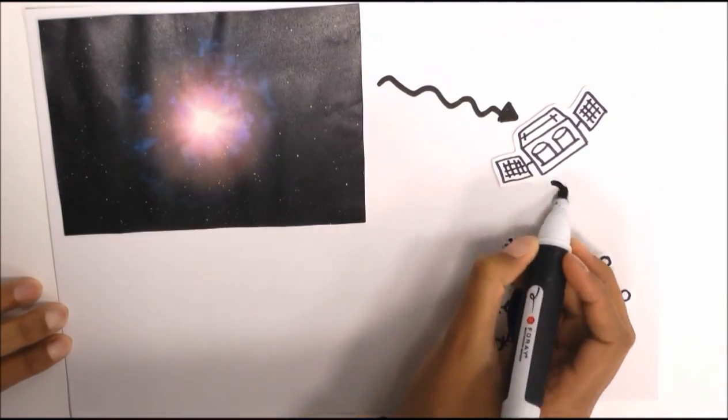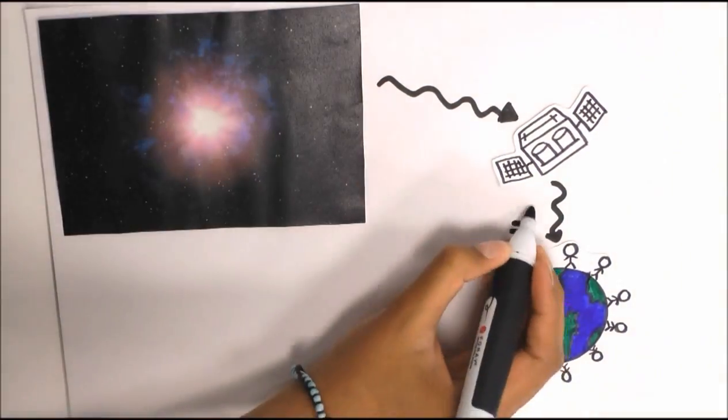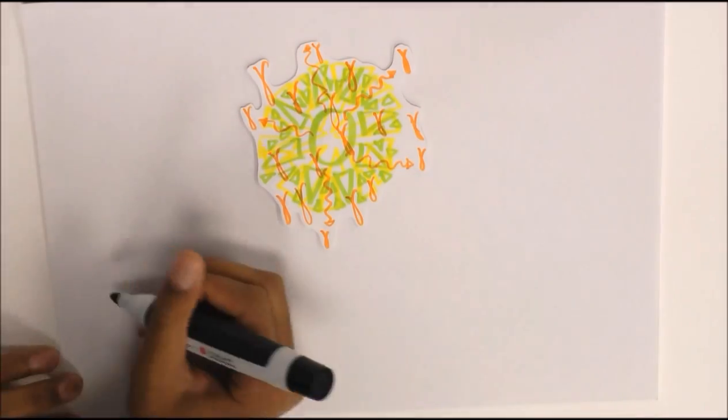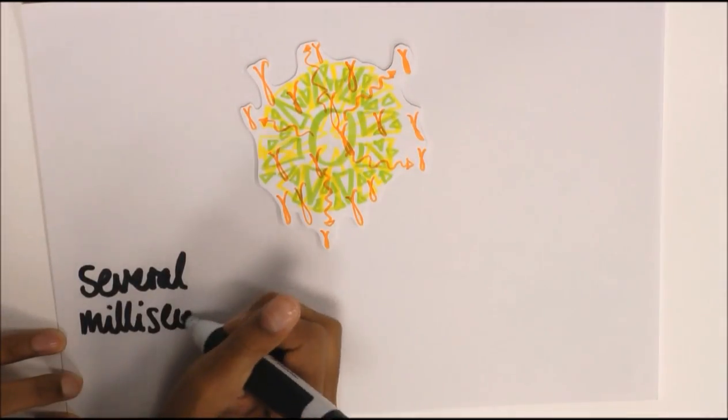Whenever a gamma ray burst goes off in space, astronomers on Earth stay alert, ready to act. GRBs are flashes of gamma ray photons which last anywhere from several milliseconds to hours.